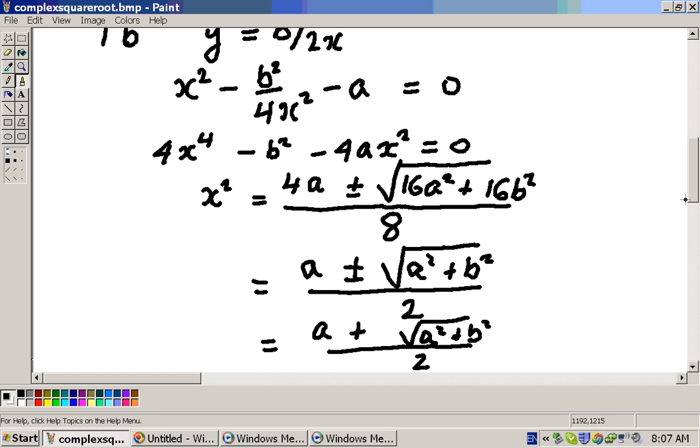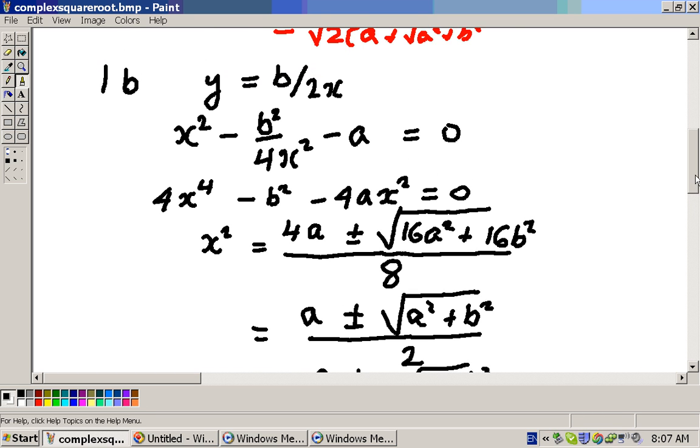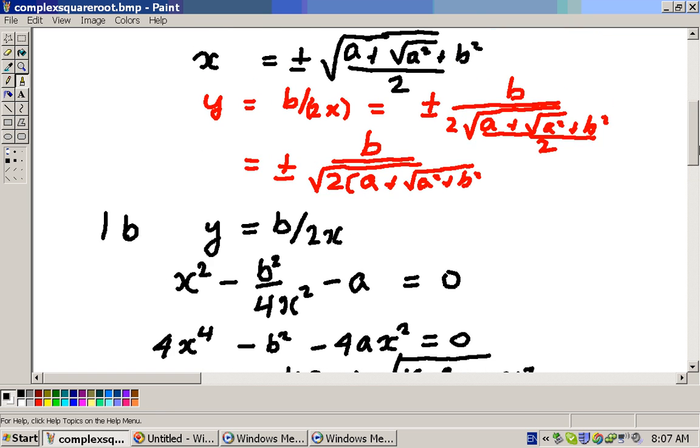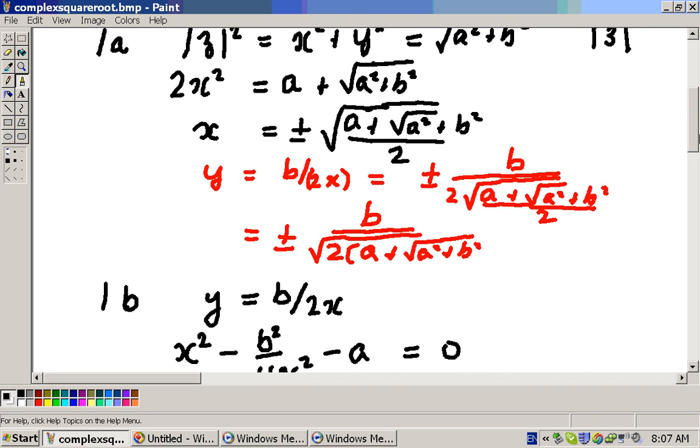And if we go back to method 1A, we saw that that's exactly what x² was here, x² was a + √(a² + b²) divided by 2. So, the rest, of course, is the same, so x is the same, and we use the second equation to find y, and we're finished. So, it gives the same result.